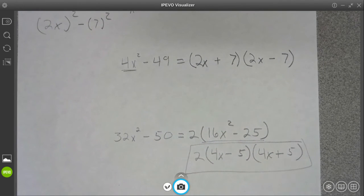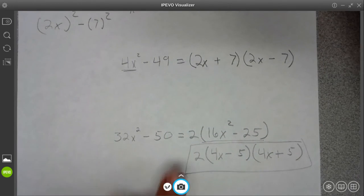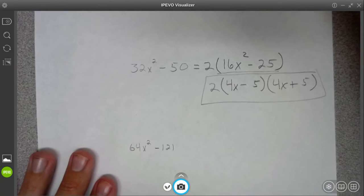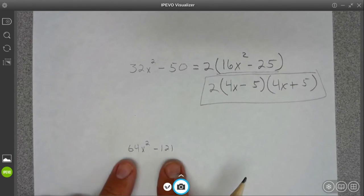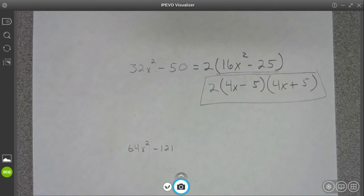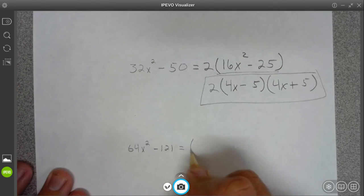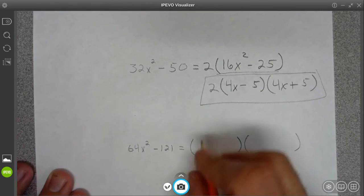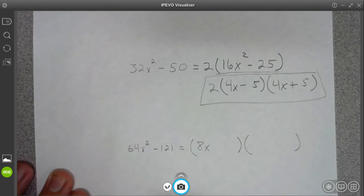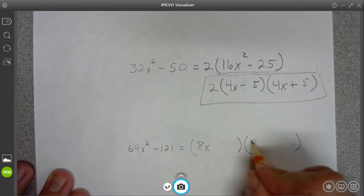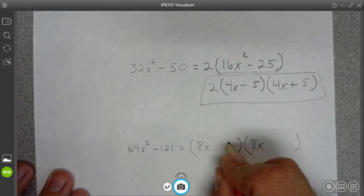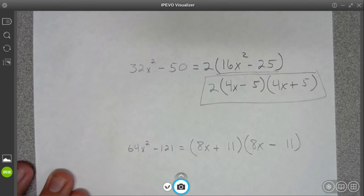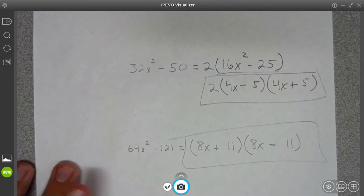You gotta remember, check for that GCF - it does make your life easier. Now 64 and 121 don't have a greatest common factor, but it will factor using difference of squares. Square root of 64 is 8, x times x is x squared, and square root of 121 is 11. One's plus, one's minus. That's it. I'll show you some more in the next video.